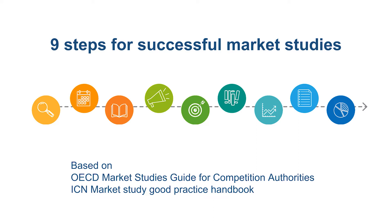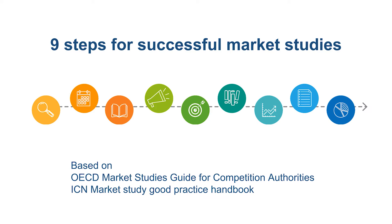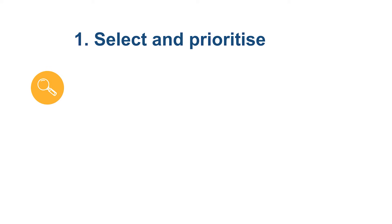The OECD's Market Study Guide and the ACN's Best Practice Handbook provide precious guidance on how to conduct effective market studies. The first step is to select and prioritize sectors that require further investigation. Competition authorities should focus their efforts on a few selected market studies that have the potential to improve competition dynamics and to increase the authority's wealth of knowledge.